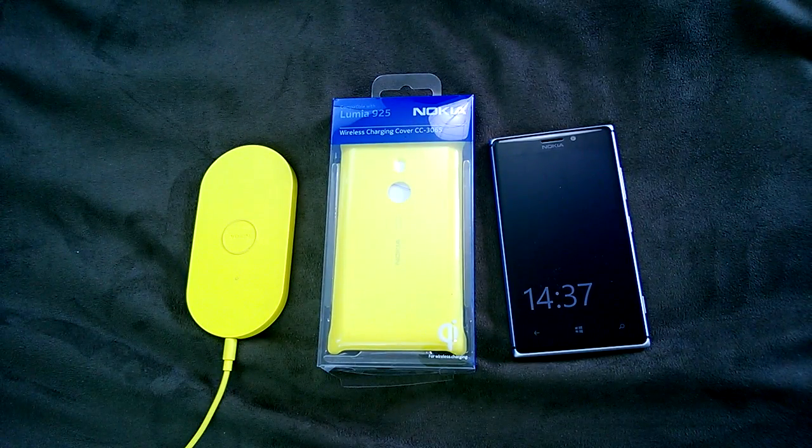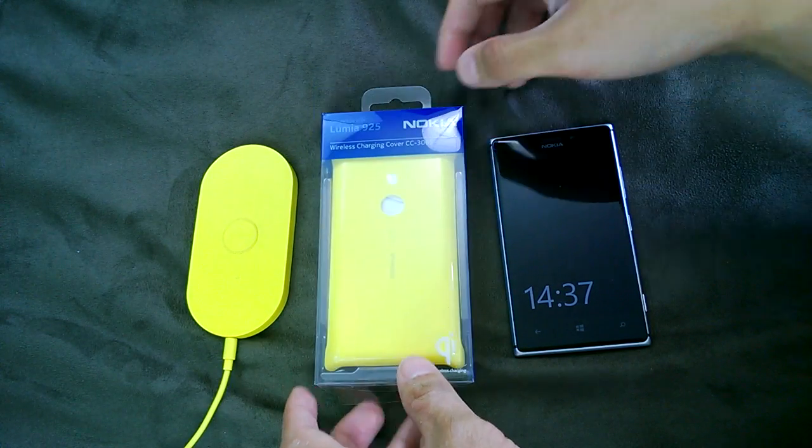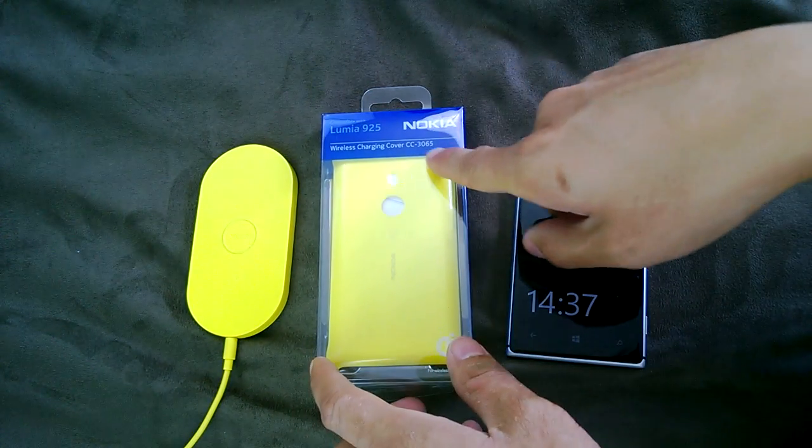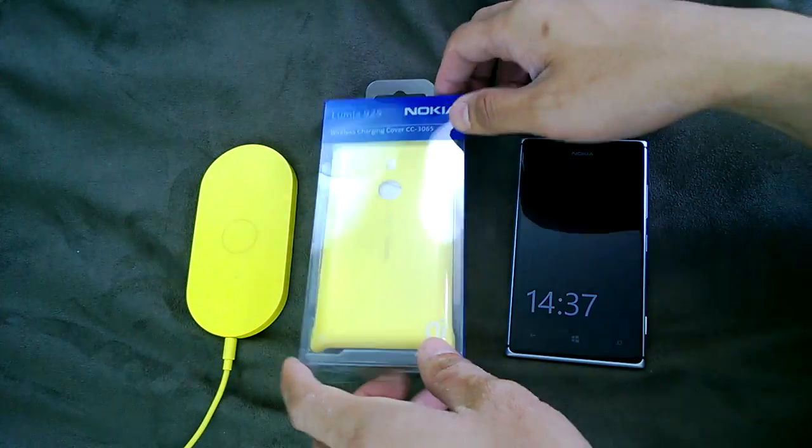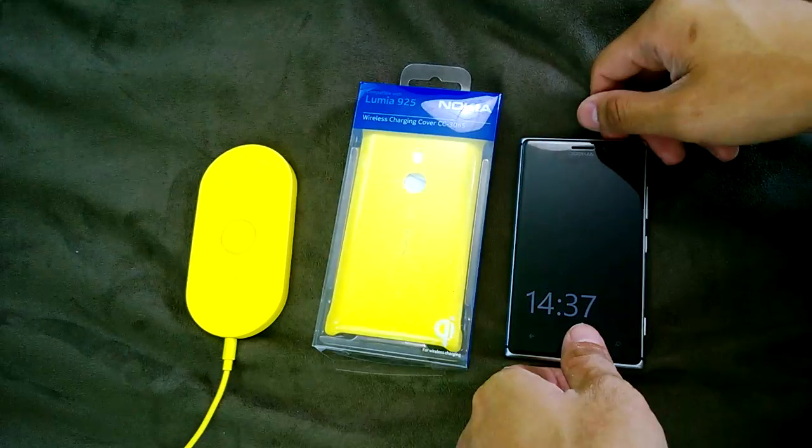Hey guys, this is Jay from mynokiablog.com. We're going to take a quick look at the Nokia wireless charging cover for the Nokia Lumia 925. This one is the CC-3065, comes in yellow, and we're going to demo the wireless charging ability with the Nokia wireless charging plate.